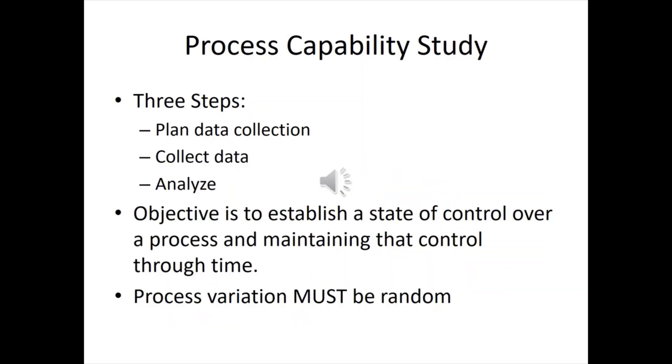Process capability. There are three steps to this thing. First, you've got to plan what kind of data you're going to collect. Collect the data and then analyze it. If you've been doing it right, you should already have some data out there. Okay, now we're just going to analyze it. The objective is to establish the state of control over the process. In other words, get it so all your variation is just random variation. And then you maintain that so it's just random variation. It has to be random. If it's not random variation, we can't analyze it using our Gaussian curves and our formulas.